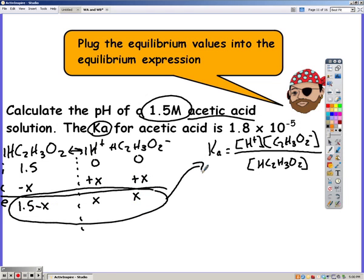I'm now going to plug these equilibrium values into the equilibrium expression. They gave me the Ka. So I plug that in. Now I'm going to plug in my X times X, which is X squared, over 1.5 minus X.